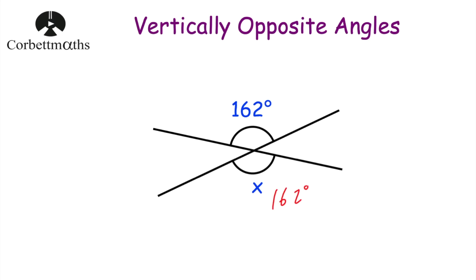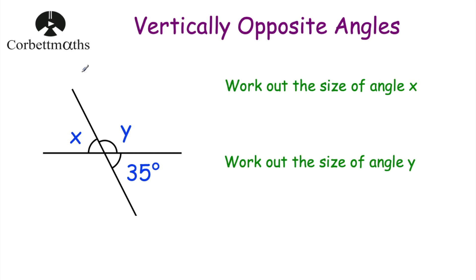Let's have a look at another example. This time we've got two straight lines across each other and we've got x, y and 35 degrees, and we've been asked to work out the size of angle x. Because we've got two straight lines across each other the opposite angles are equal. So if this is 35 degrees, x would also be equal to 35 degrees because they're opposite each other. So angle x is 35 degrees.